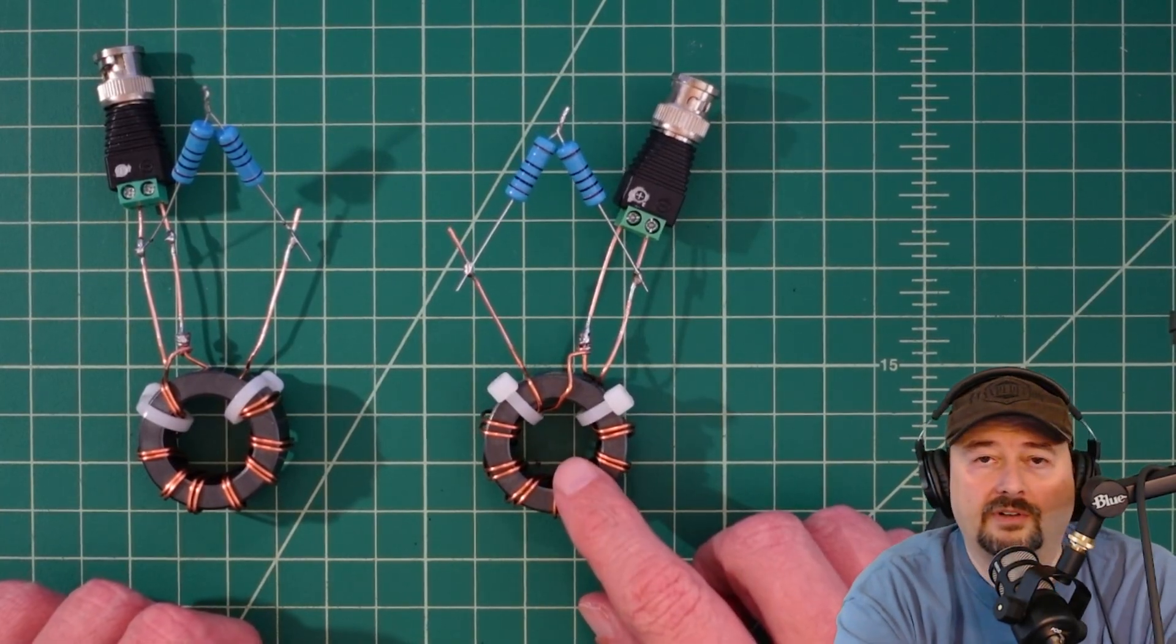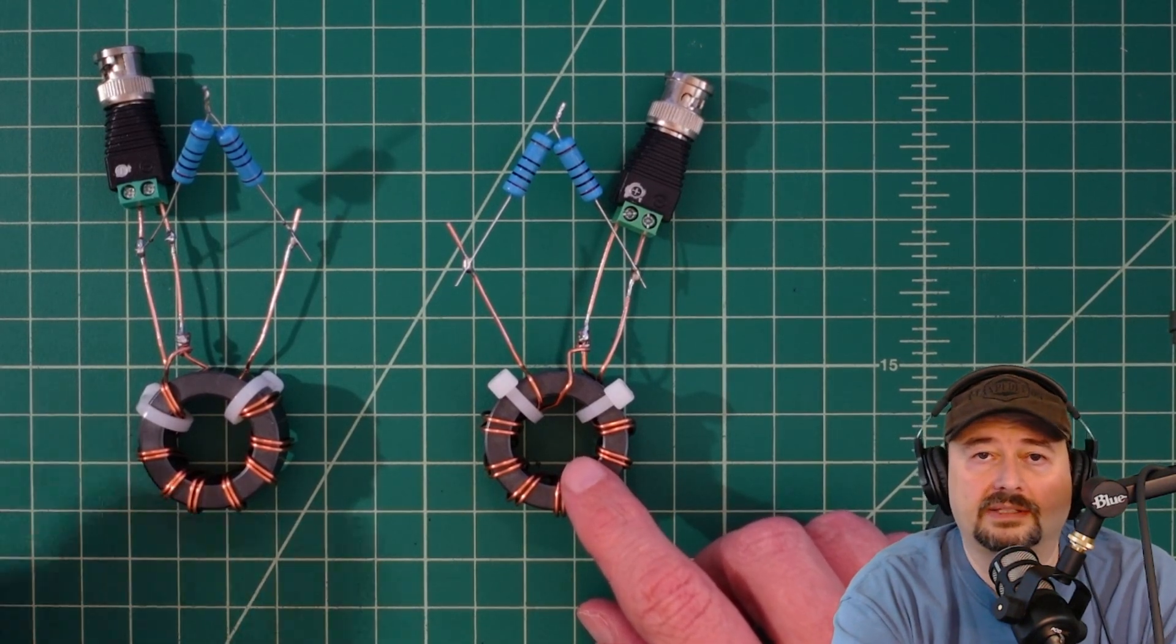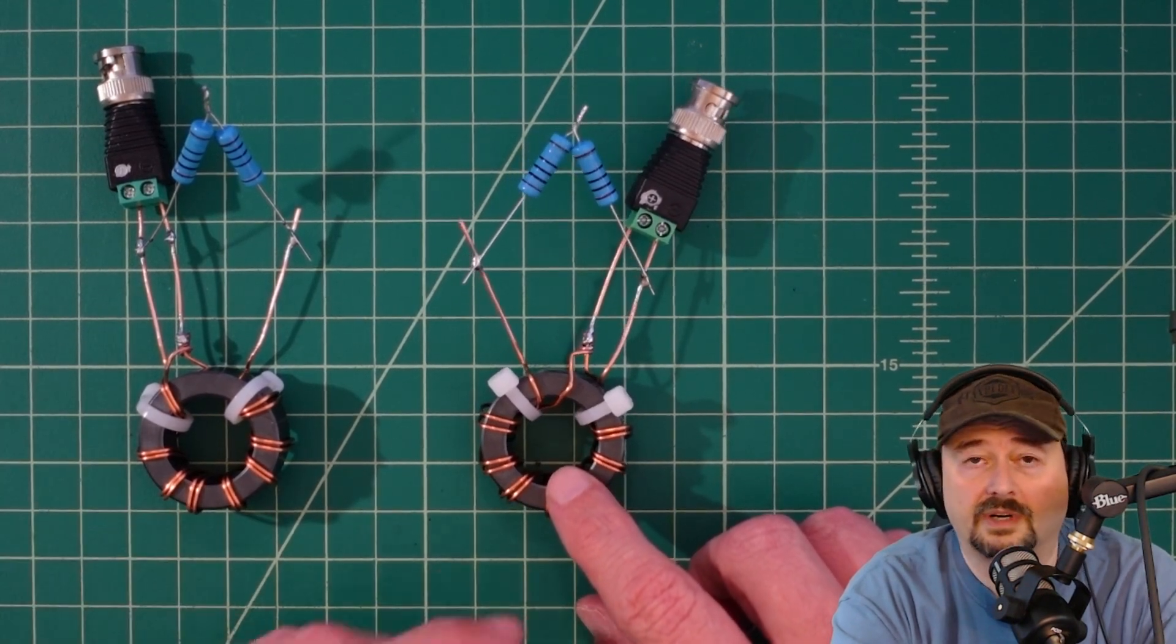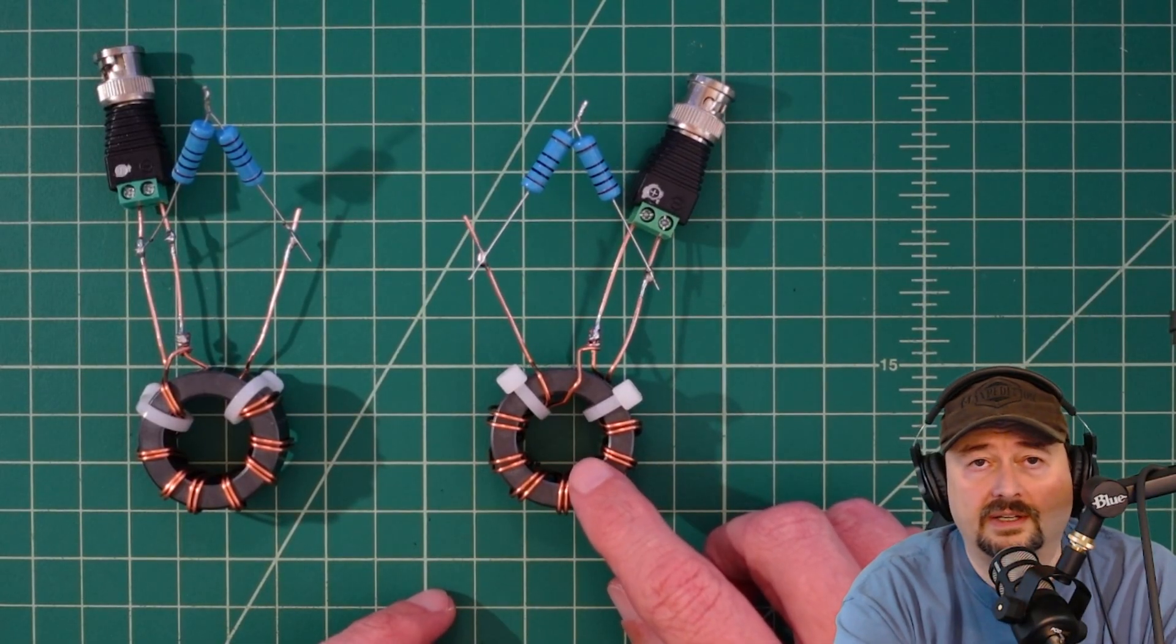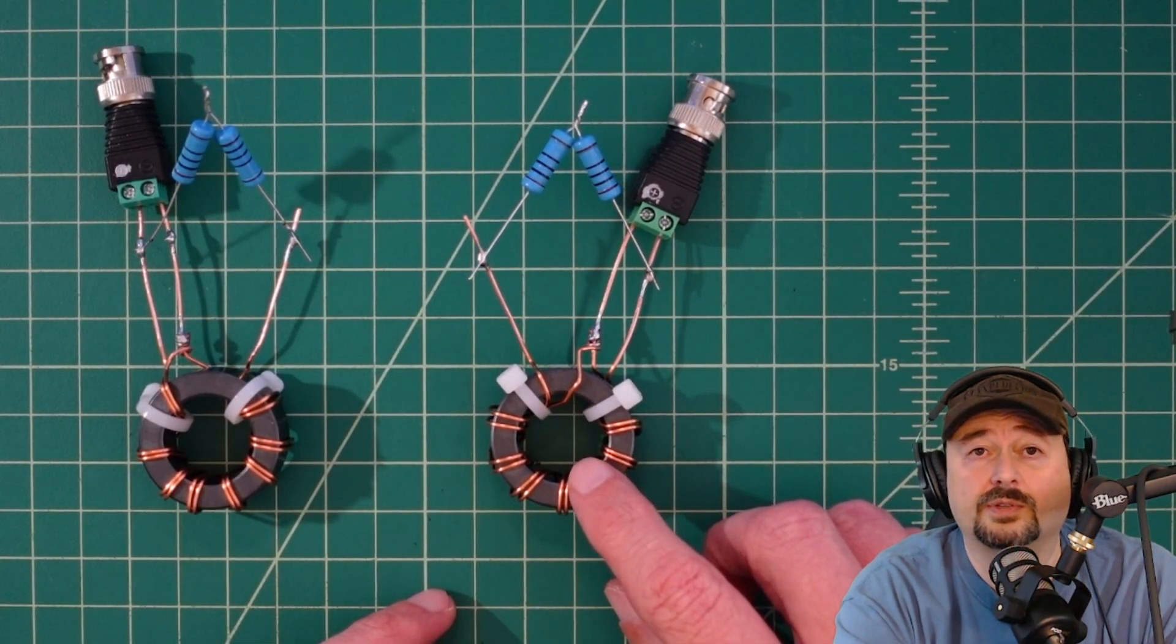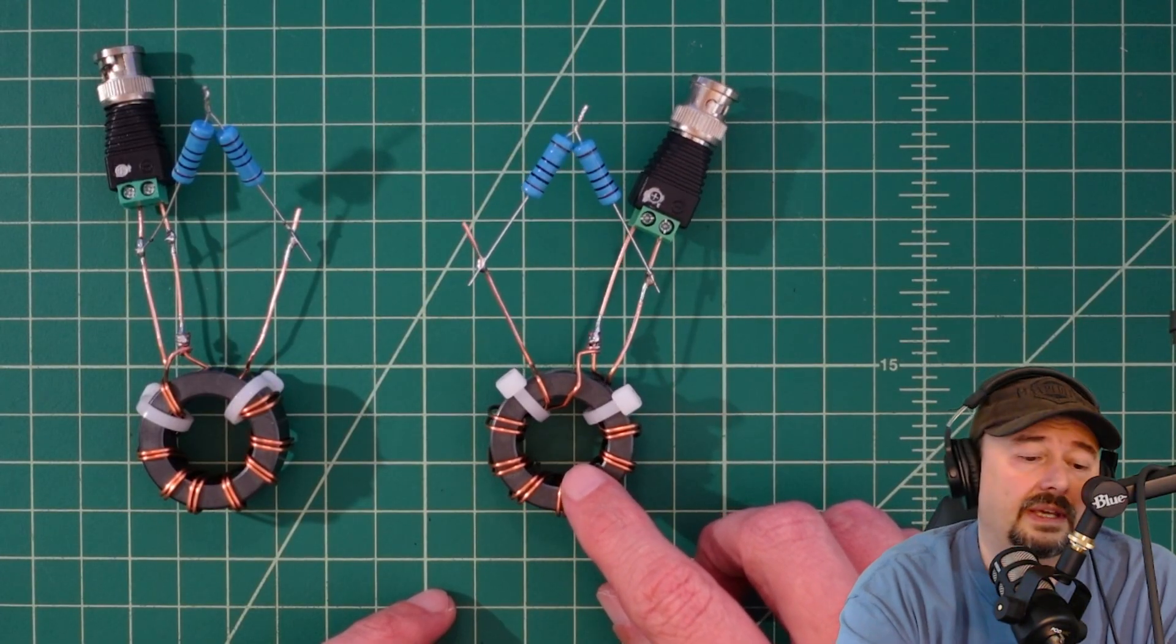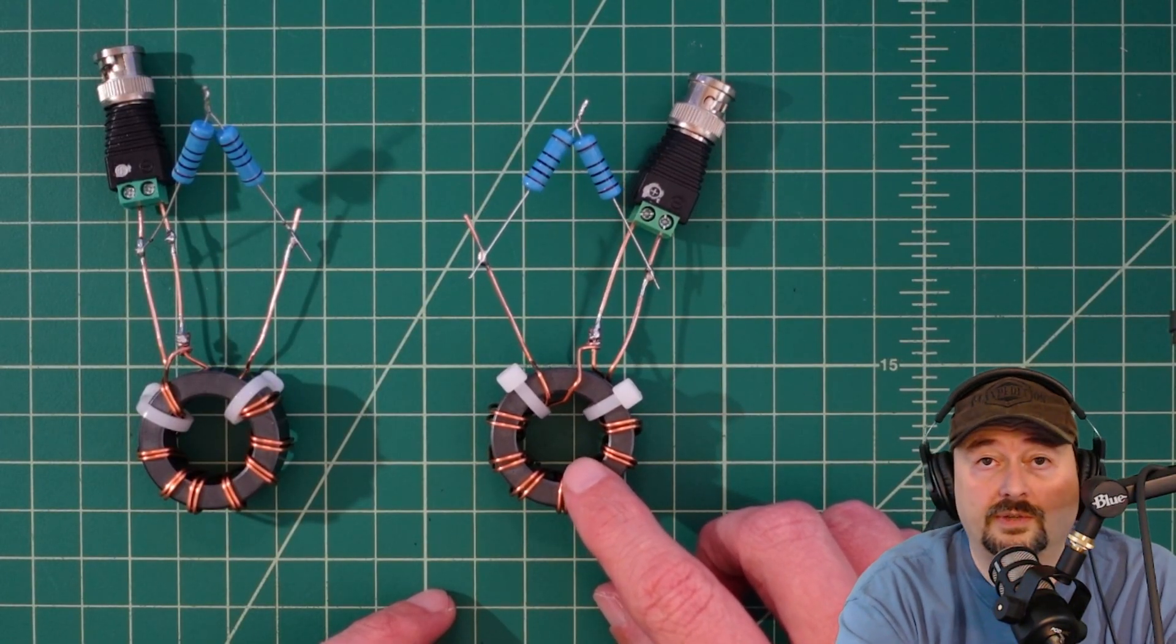Over here we have our unun which is unbalanced to unbalanced. We're going to use an unbalanced load with our unbalanced coaxial cable. Antennas that meet this criteria typically are things like verticals, NFED wire antennas, and stuff along those lines.